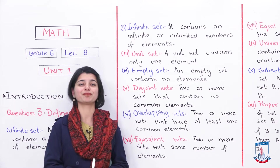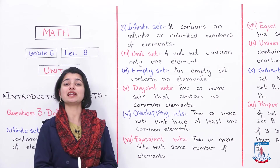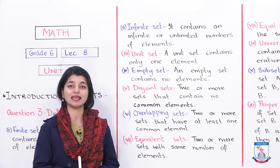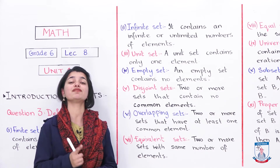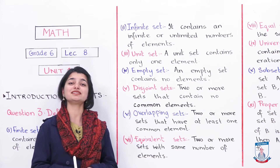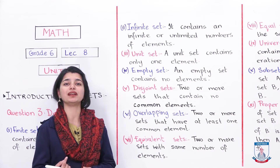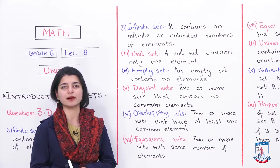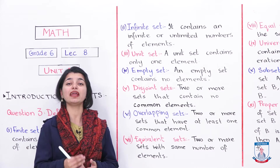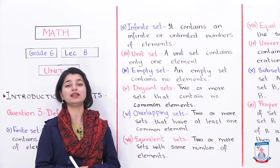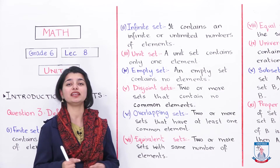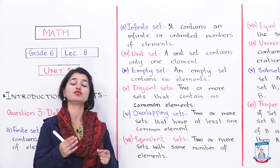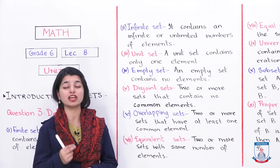The third definition is unit set. Unit set is a very easy definition. A unit set is a set that contains only one element — one name, one number, one city — only one thing. We say this set is a unit set. For example, you can write a single element and call it a unit set.